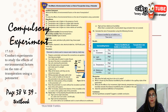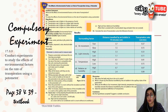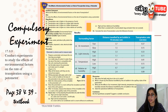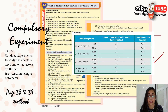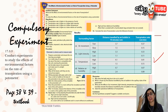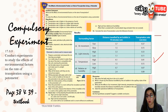This subtopic requires an experiment to study the effect of environmental factors on the rate of transpiration using a photometer. The expected result is that transpiration rate is higher with more light intensity, more air movement, and higher temperature, but lower when air humidity is higher. For the experiment, use a plant with many green leaves so transpiration happens clearly, and make sure the leaves are dry.